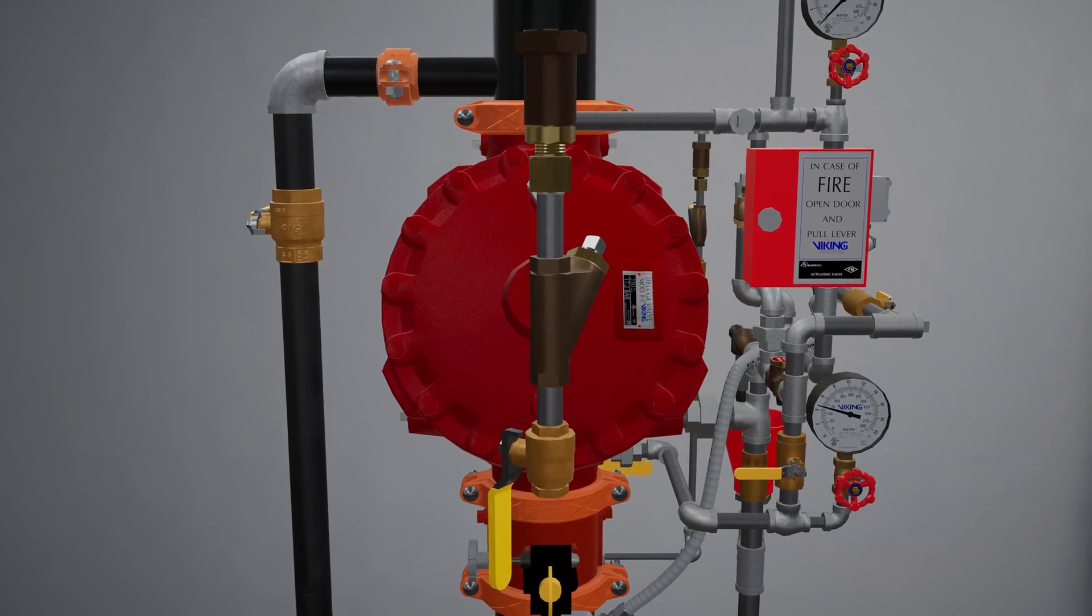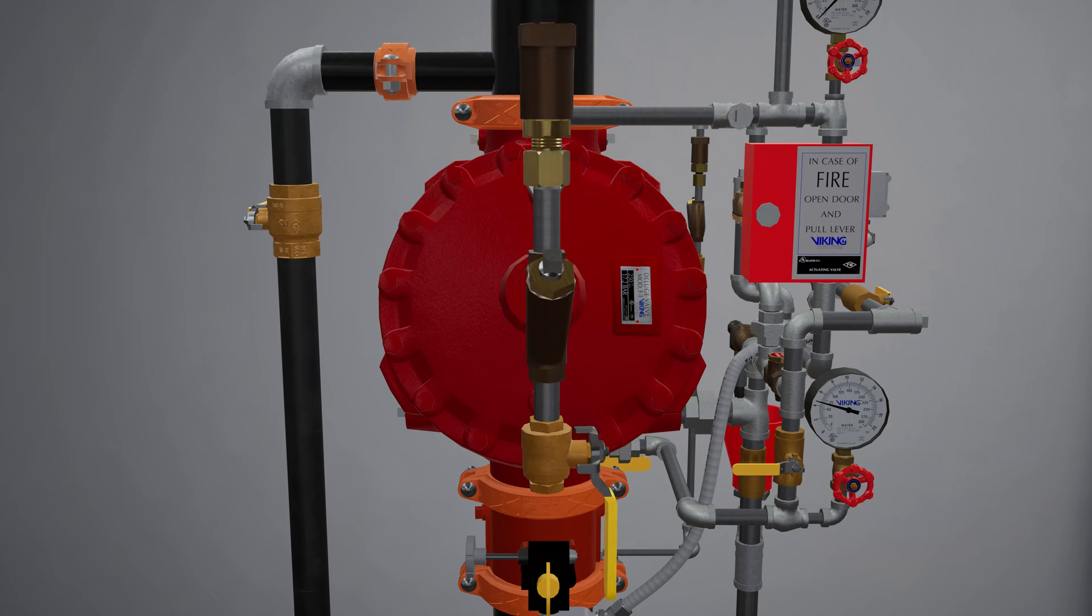The primeline directs water to the prime chamber of the deluge valve. The primeline consists of an open priming ball valve, a Y strainer, a restricted orifice, and a check valve.